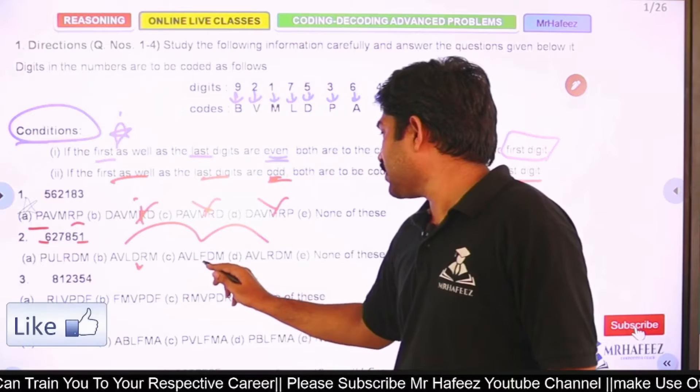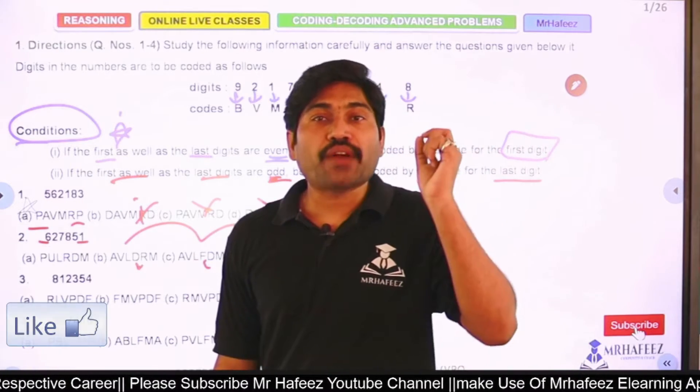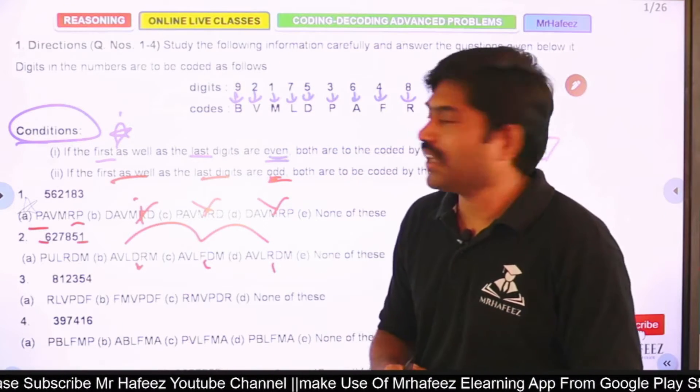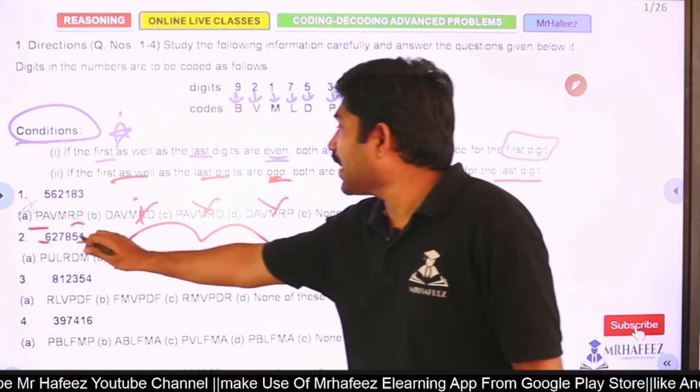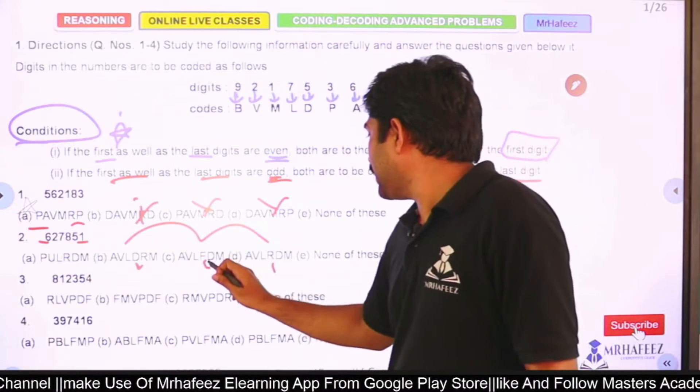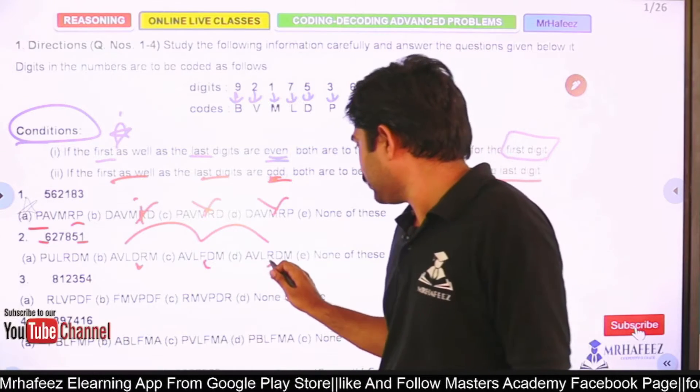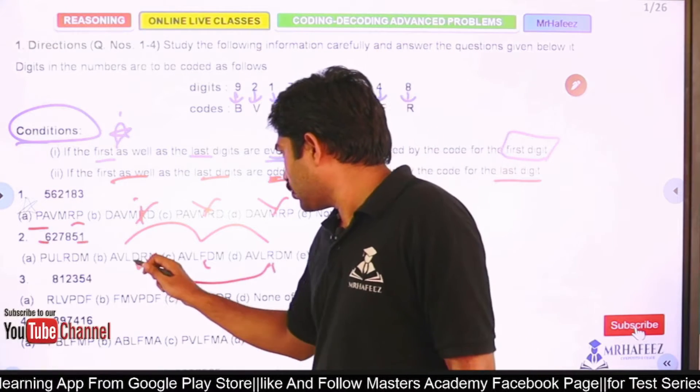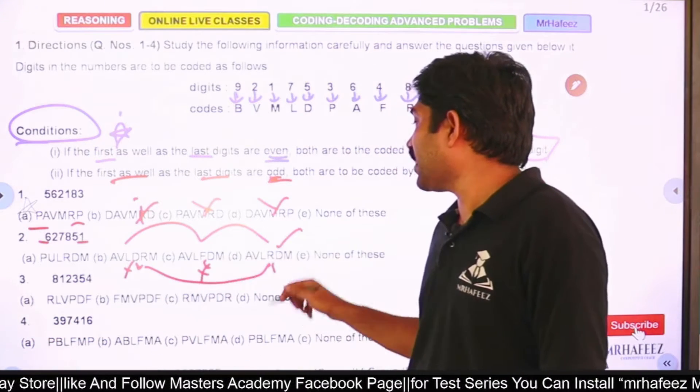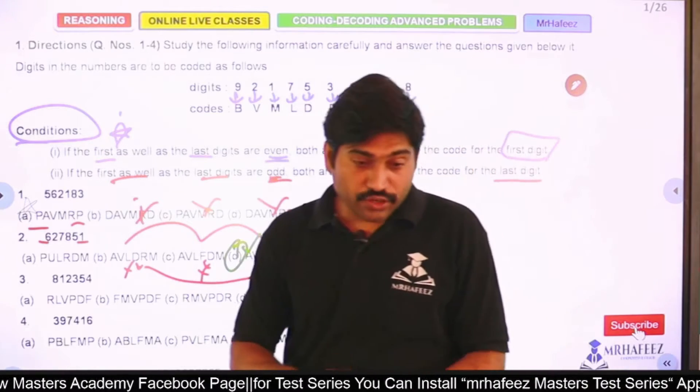Try to find out the 4th digit first. 4th digit is 8. 8 means R. This is R, this is R, this is R, and this is D. So 4th digit - check each option. Option B and A is correct. Very good.